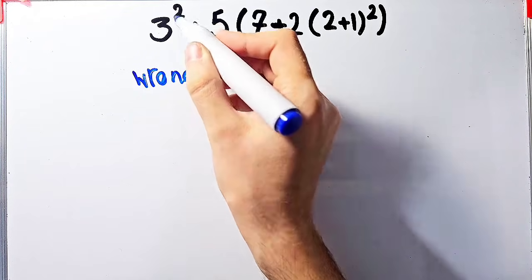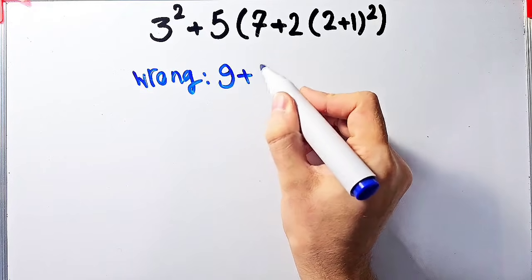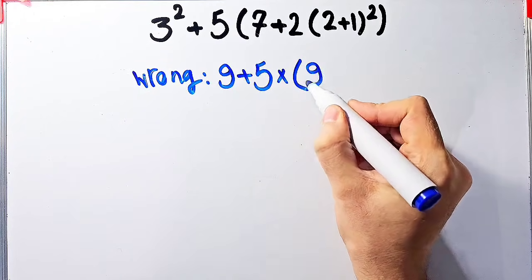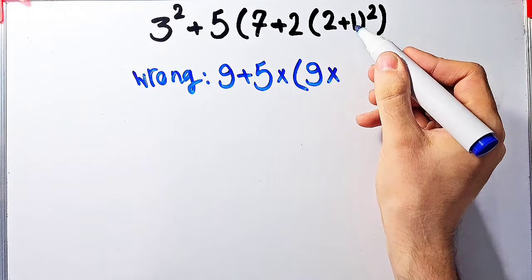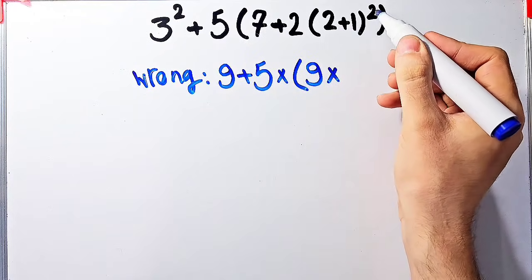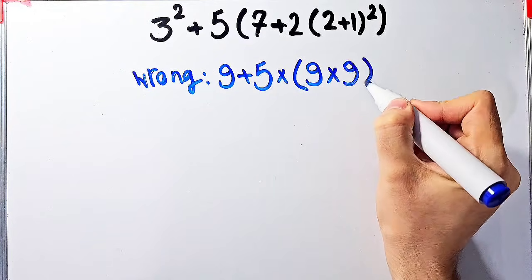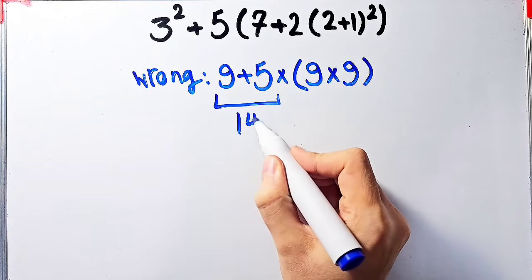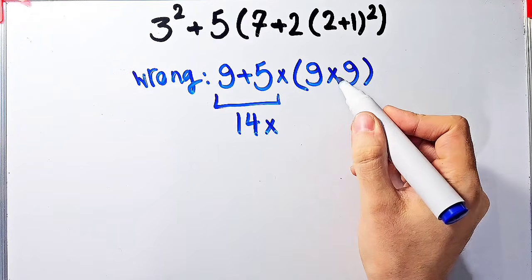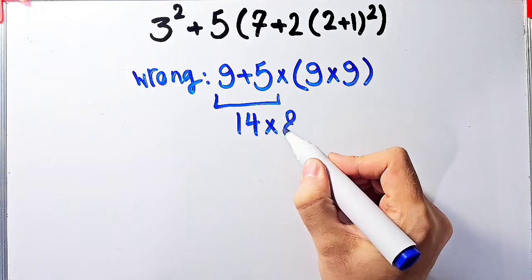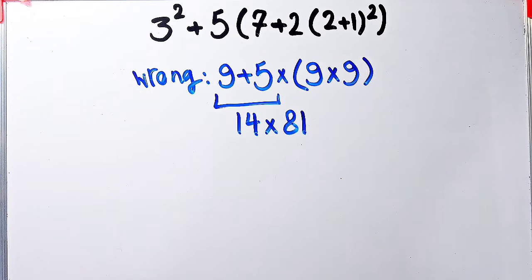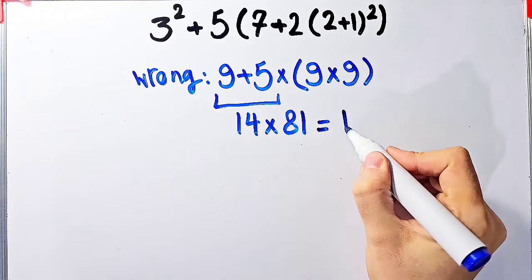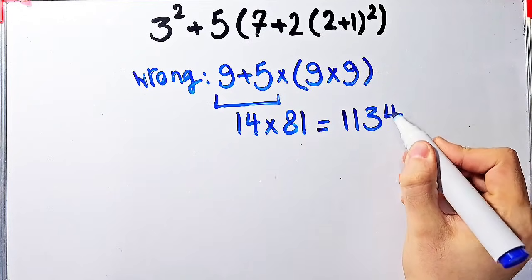Some people solve this question like this: three to the power of two equals nine, nine plus five, then times seven plus two, which equals nine, times two plus one, which equals three, and three to the power of two equals nine. Nine plus five equals fourteen, fourteen times nine times nine which equals eighty-one, and they say fourteen times eighty-one equals one thousand one hundred and thirty-four.